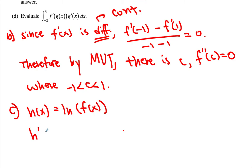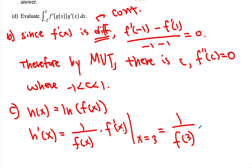So then since h of x is equal to ln of f of x, that means h' of x must be equal to 1 over f of x times f' of x. But when x is equal to 3, then we get 1 over f of 3 times f' of 3.